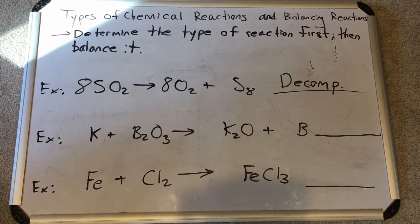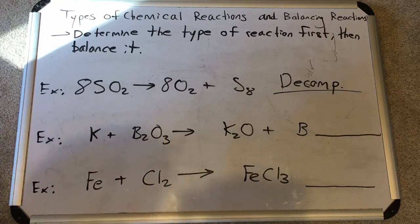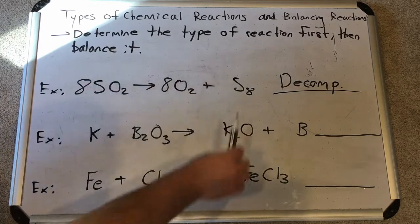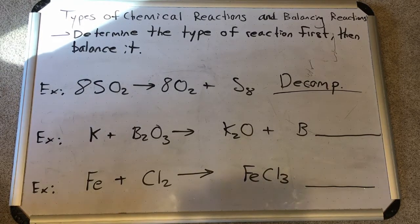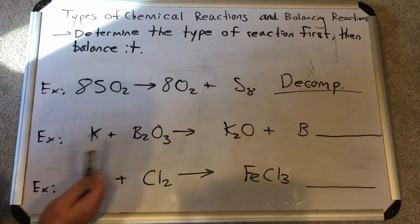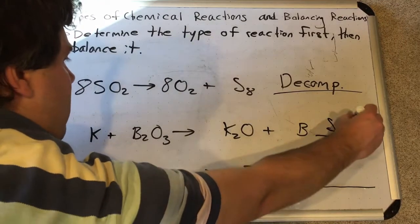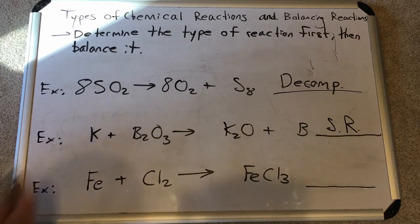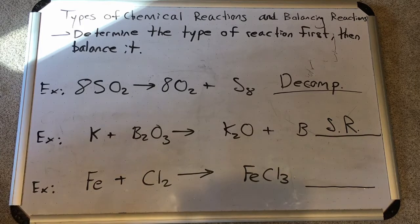Next example: potassium plus diboron trioxide B2O3 — if boron were a nonmetal — yields potassium oxide plus elemental boron. What type is this? There's a single element on each side and a compound on each side, and potassium has switched places with boron. Boron is now on its own on the product side, so this is a single replacement reaction. Potassium knocked boron off and bonded with oxygen instead.